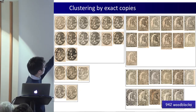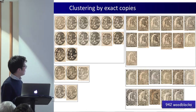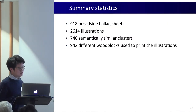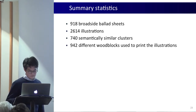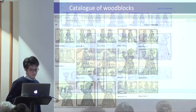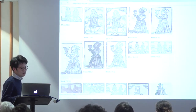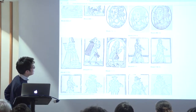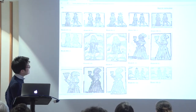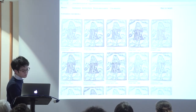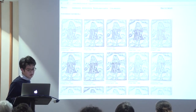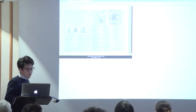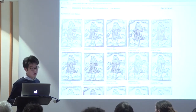We now know that the images at the top have been printed from a different woodblock from those at the bottom. On our dataset, these are the summary statistics we have found. Using this method we have automatically built a catalogue of all the woodblocks that appear in our dataset. Here we see multiple instances of illustrations printed from the same woodblock, and we can look at the ballad sheets in which they appear. Remember that this is done entirely automatically with no human input whatsoever.